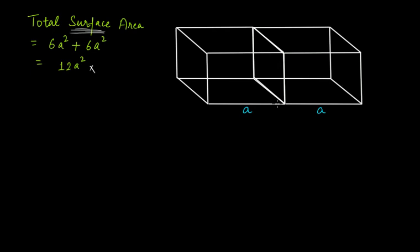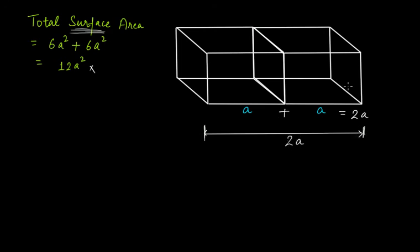When the two cubes are joined, the new object is actually a cuboid. The length of this new shape is a + a = 2a, while the breadth remains a and the height also remains a. So the new shape has dimensions 2a × a × a.